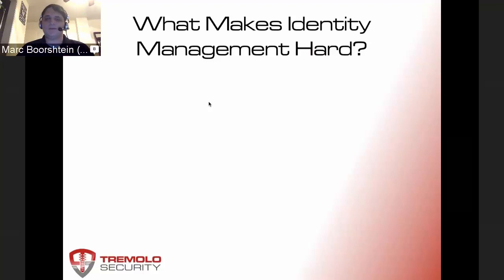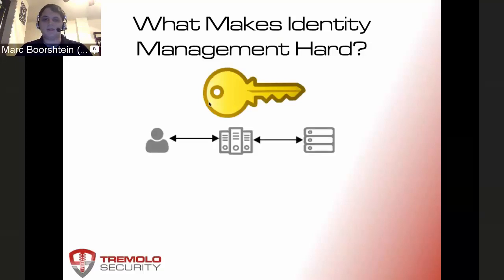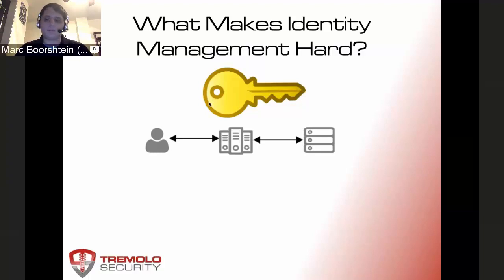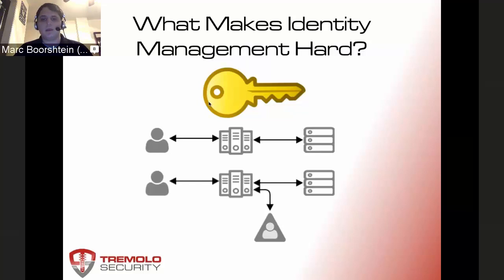Before we get into OpenUnison, I want to talk about what makes identity management hard. Most applications have users, an app, and a database — that's easy enough. But in an enterprise environment there's Active Directory with policies: passwords must reset every 90 days, need certain complexity. You don't want to handle that inside your application, so you just talk to Active Directory. Except since 2000, Microsoft has been telling everybody to break up their Active Directory infrastructure into multiple forests.